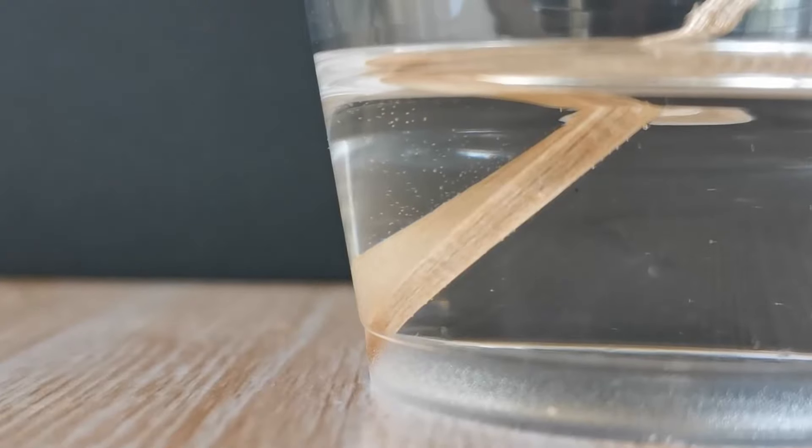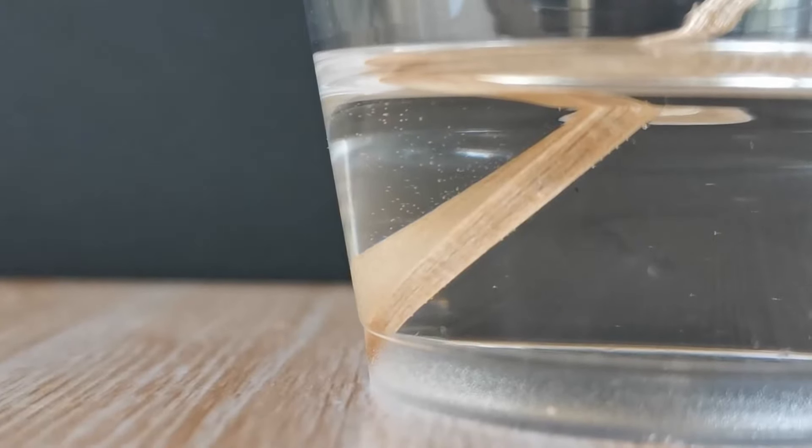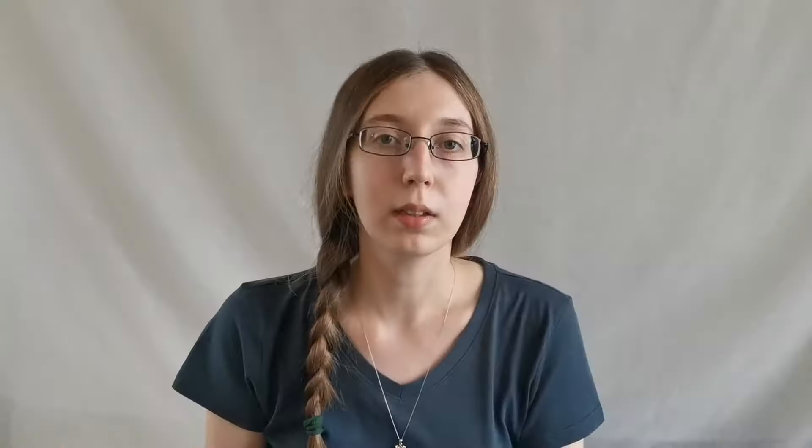Now the next tip is to do with how we're mixing the resin. So popsicle sticks are a popular thing to use, because they're easy to get and they're cheap, but because these are made of wood, they're a little bit porous, so they can sometimes leach tiny bubbles into the resin. It's better to use something non-porous, like plastic or silicone.